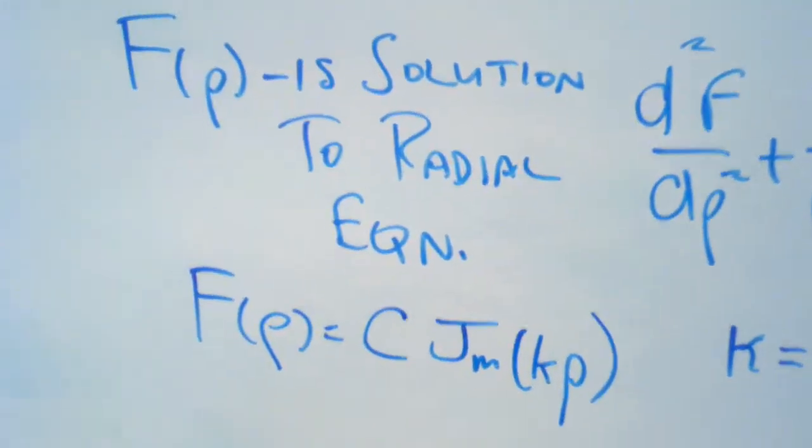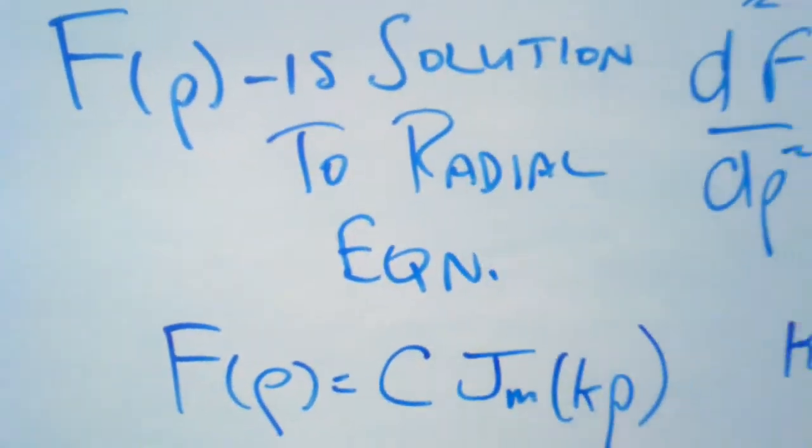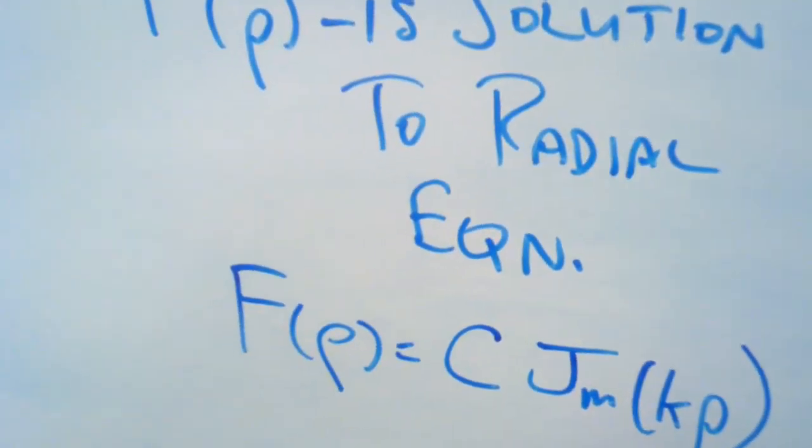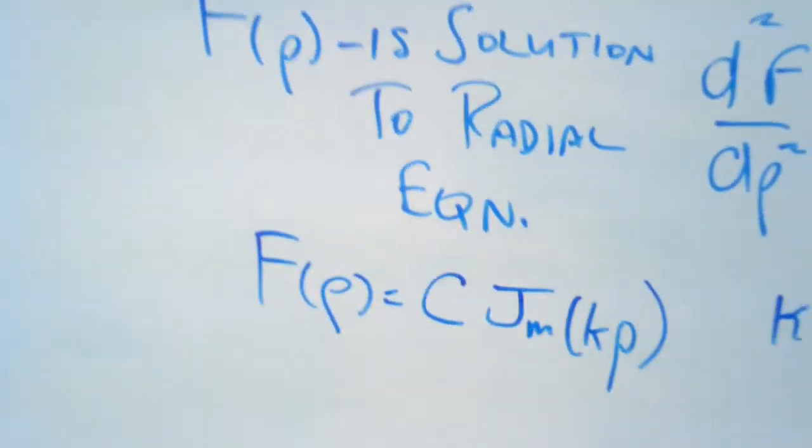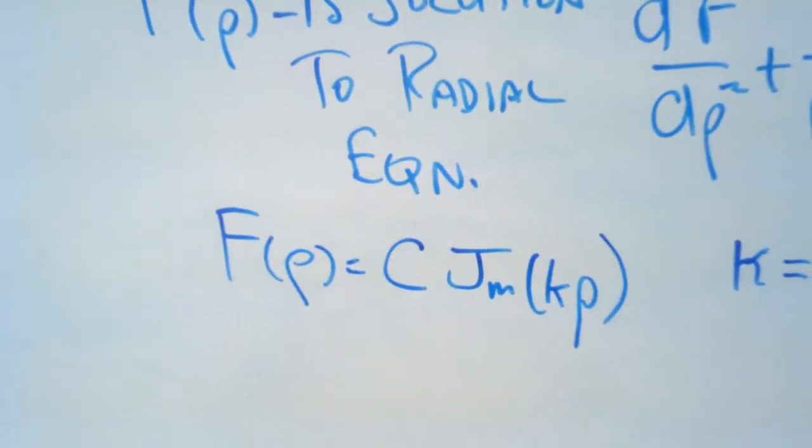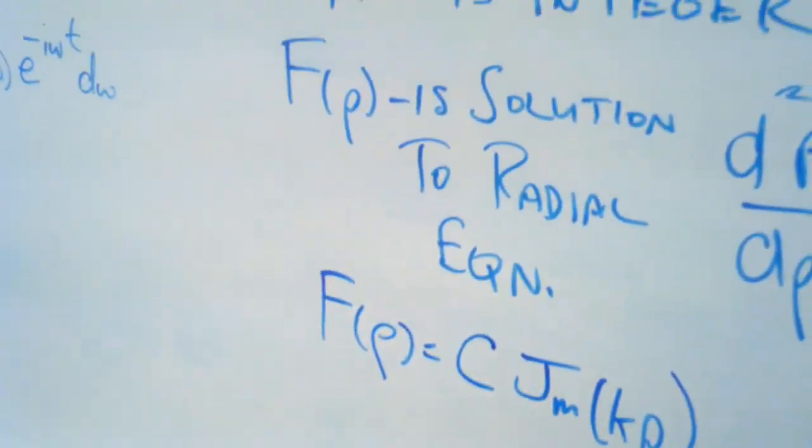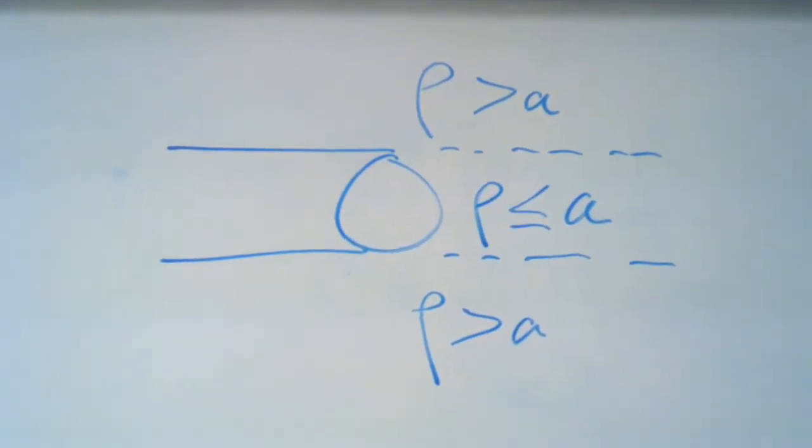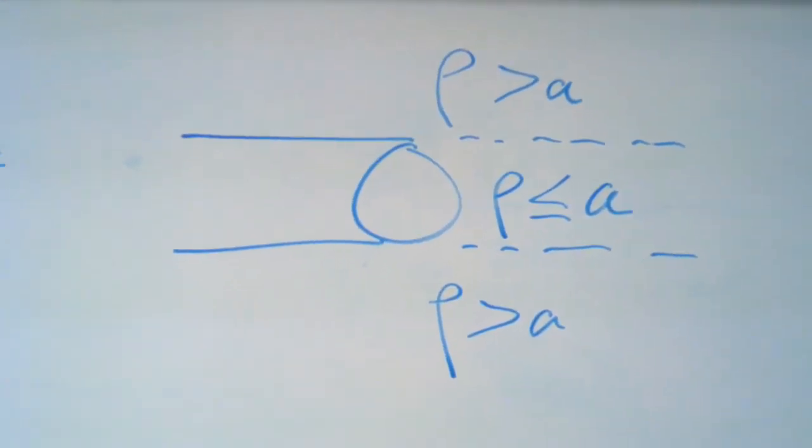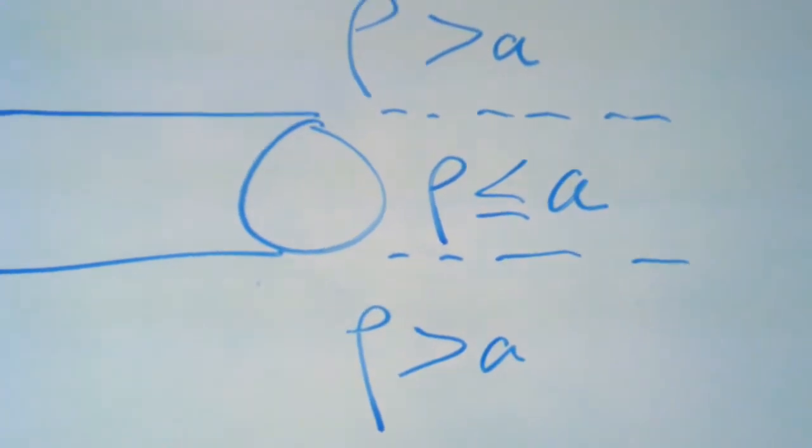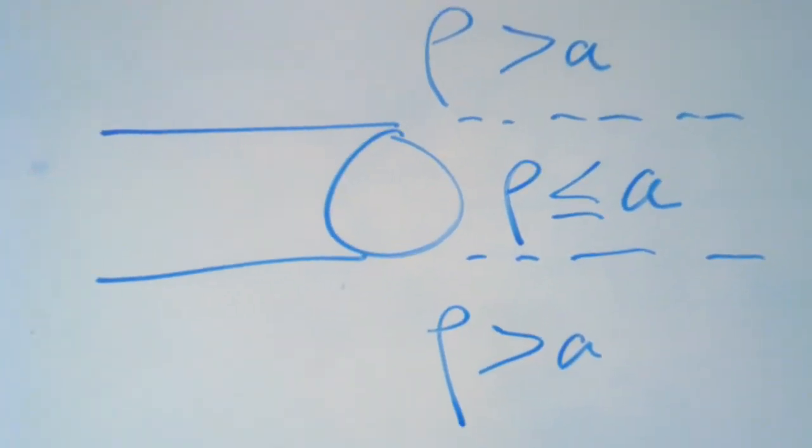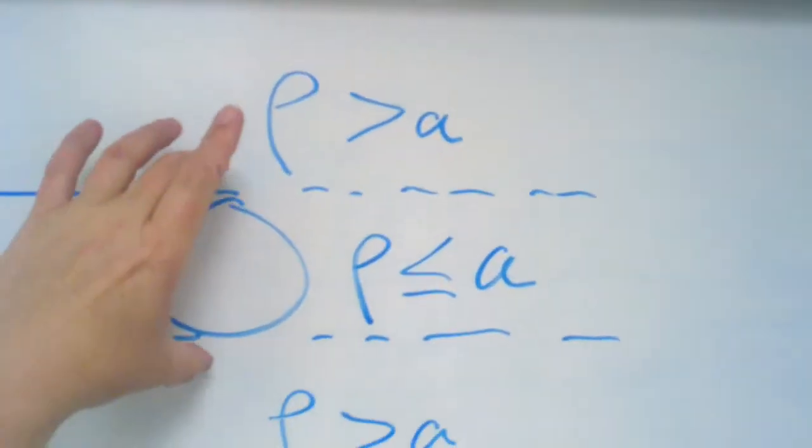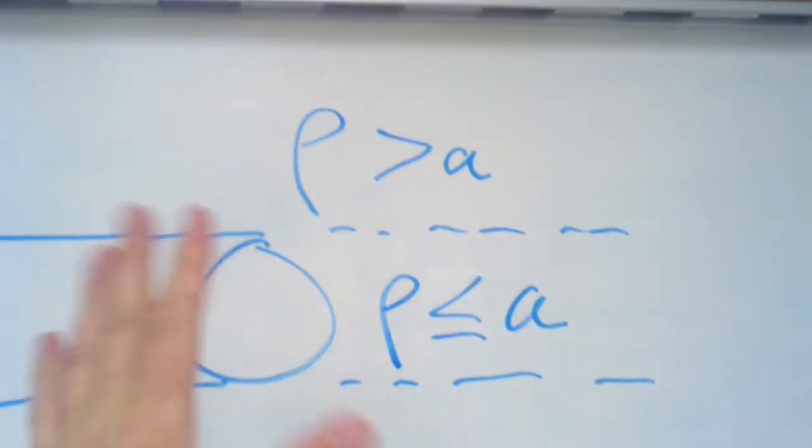This is going to be the general form for the f of rho. We write some constant and then a Bessel's function, and we're going to determine the constant by placing boundary conditions on the general solution for the Bessel's function. One thing we should mention is that we're interested in two different regions. What is the behavior of the dispersion on the interior where the radial function is less than or equal to A, the core radius. A is the core radius.